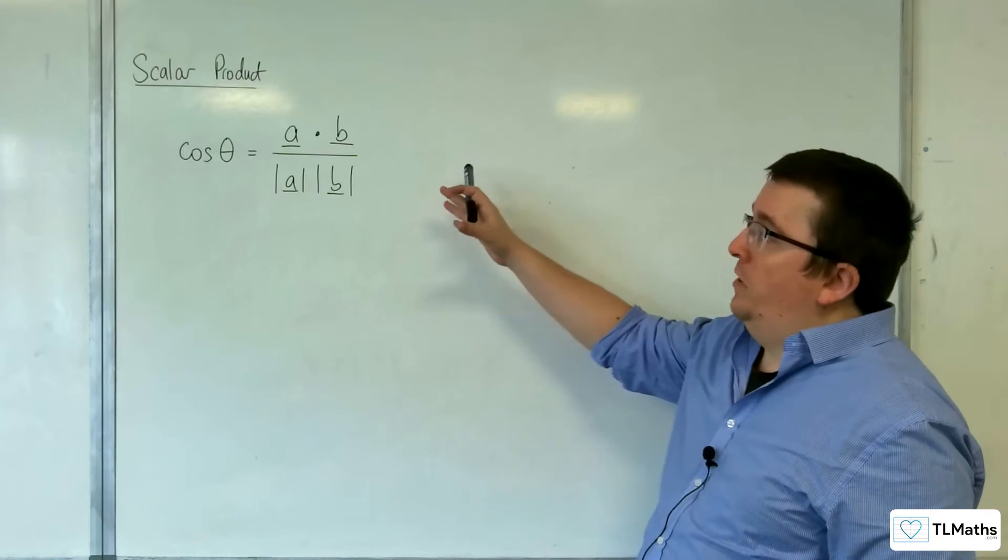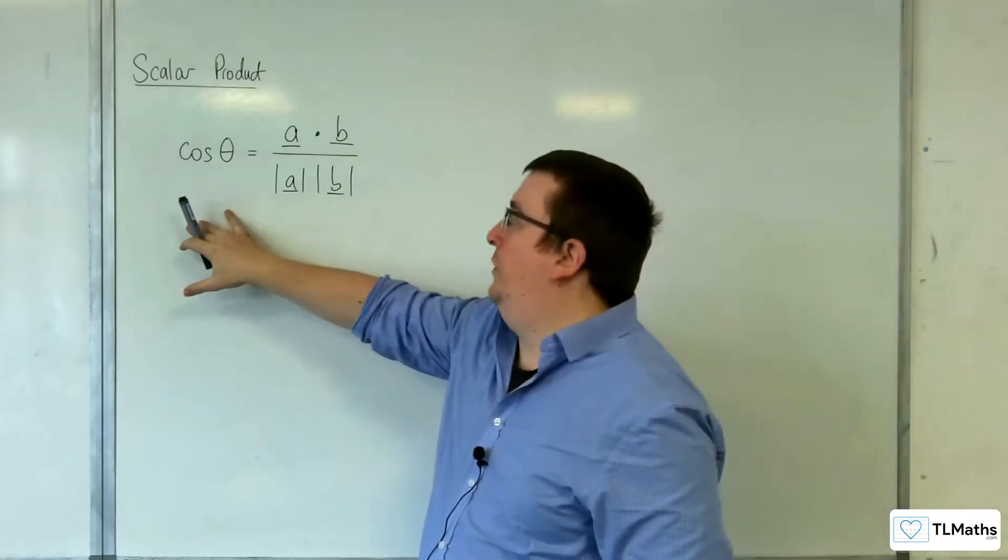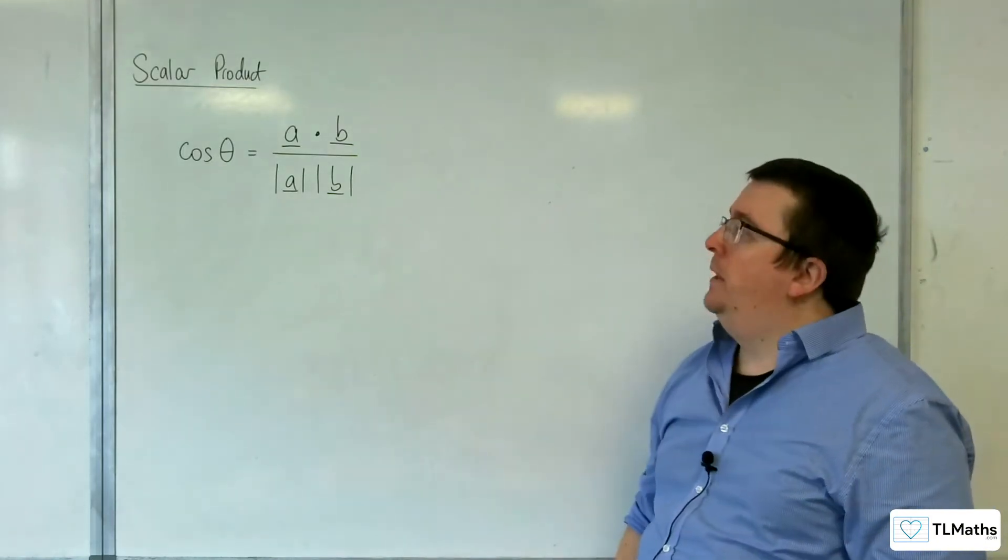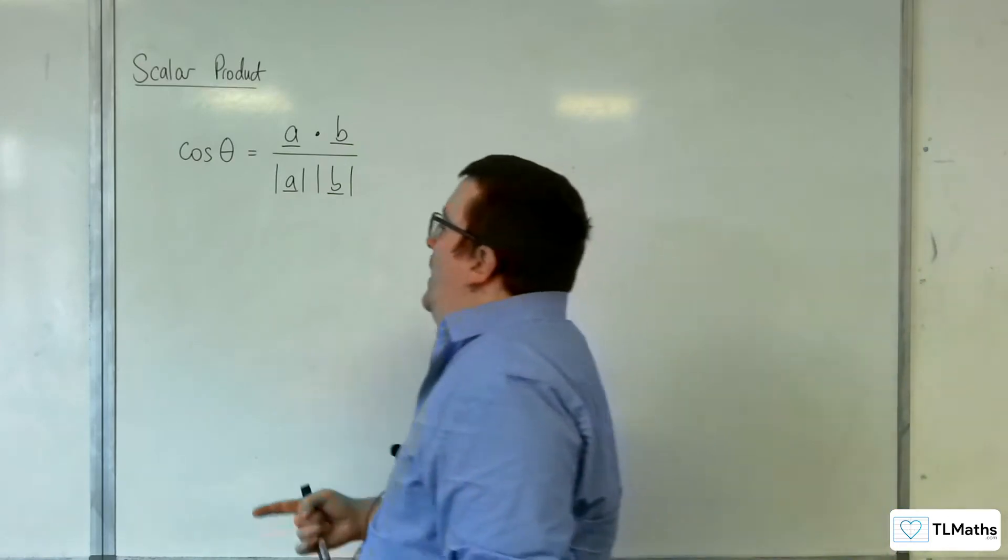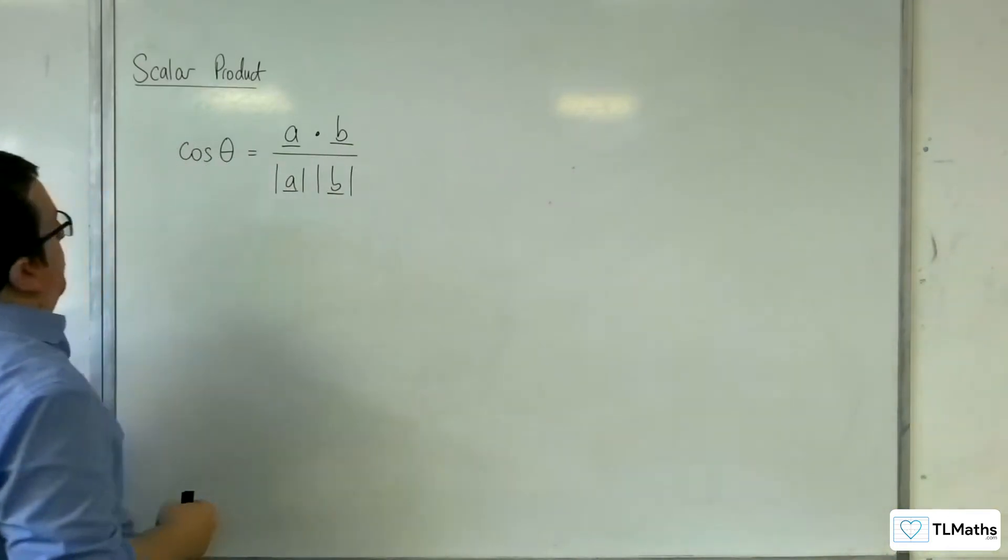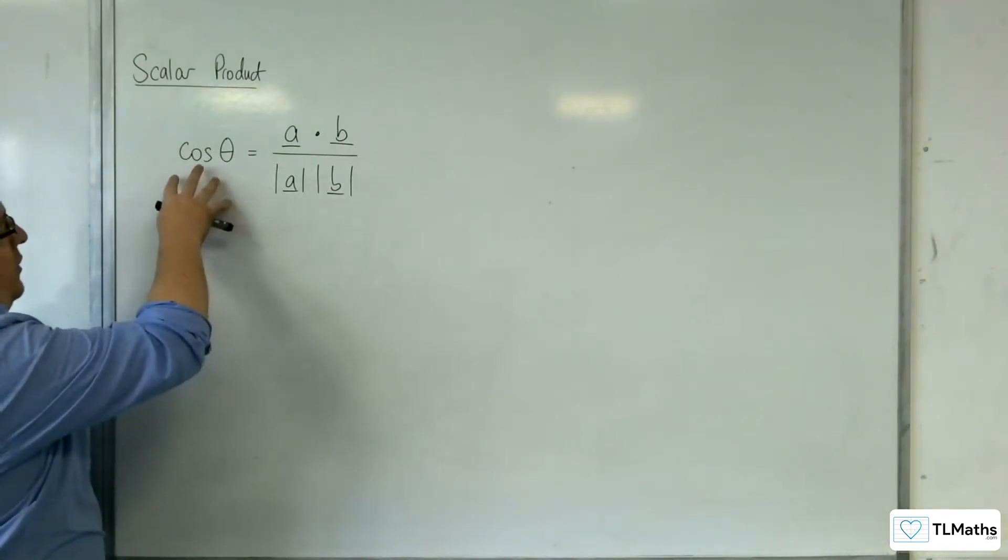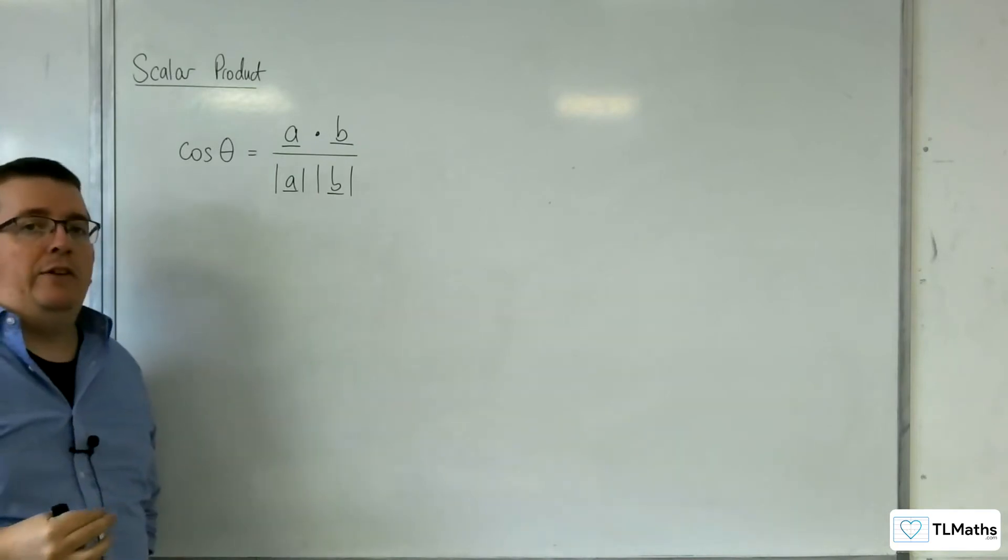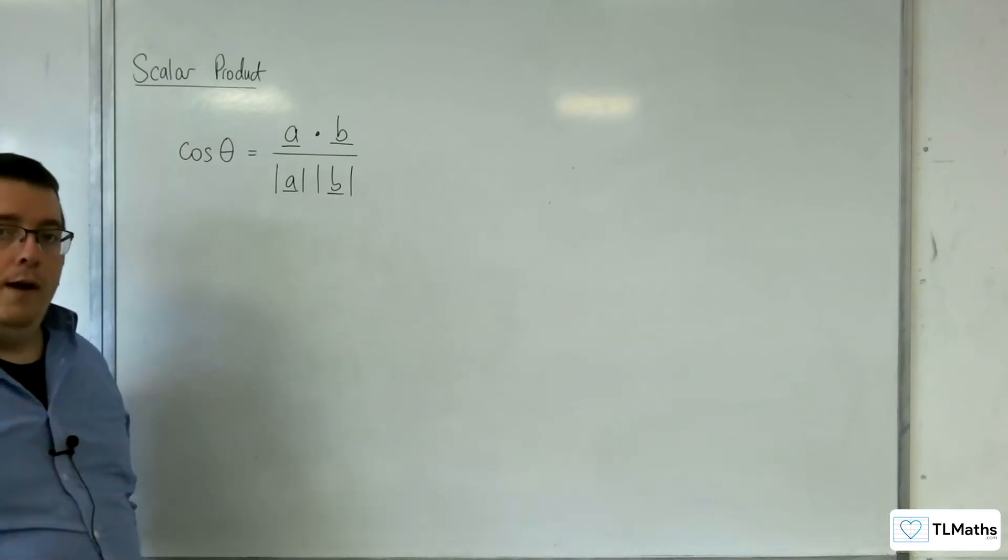We've met the scalar product and gone through several situations where we need to use it. One thing we haven't really considered up to this point is because cosine theta can take on values between minus 1 and 1, it can take on the value of 0.